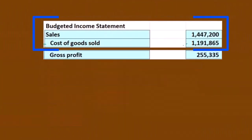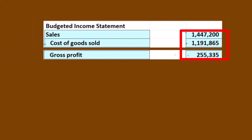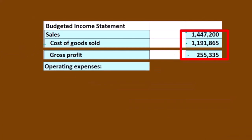Then we're going to have the gross profit. That's going to be the sales minus the cost of goods sold — that will give us the gross profit calculation as normal.